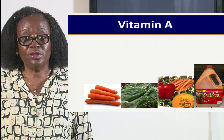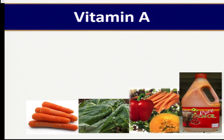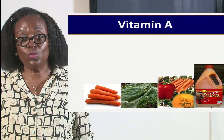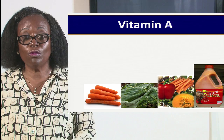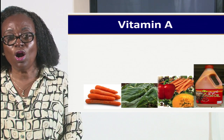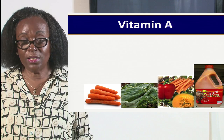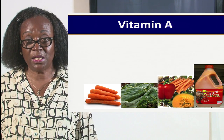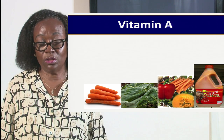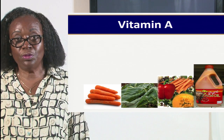Vitamin A in Ghana: animal products contain retinol, the best source, but most people cannot afford them. So we get it from the provitamin A, which is beta carotene, from carrots, kontomre, ademe, boma, and all green leafy vegetables — boko boko and the rest. All of them are rich in provitamin A. Palm cane and palm oil are also rich in provitamin A and are very common on our market.